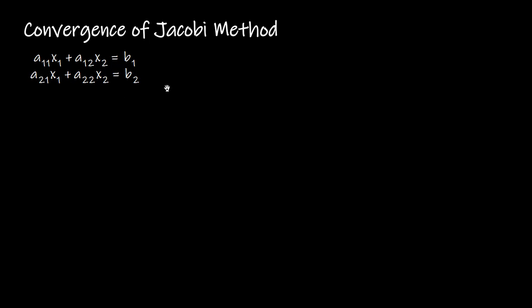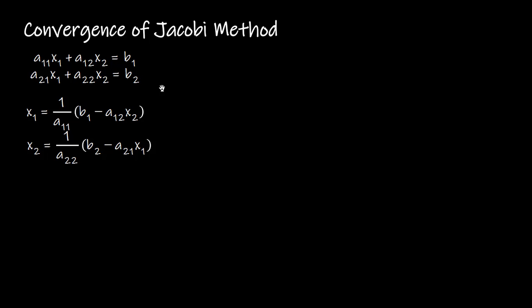The algorithm of the Jacobi method says we need to find the solution expression of the first variable from the first equation and the solution expression of the second variable from the second equation. Hence the solution expression of X1 is written as (1/a11)·(b1 − a12·X2), and the solution expression of X2 is written as (1/a22)·(b2 − a21·X1).